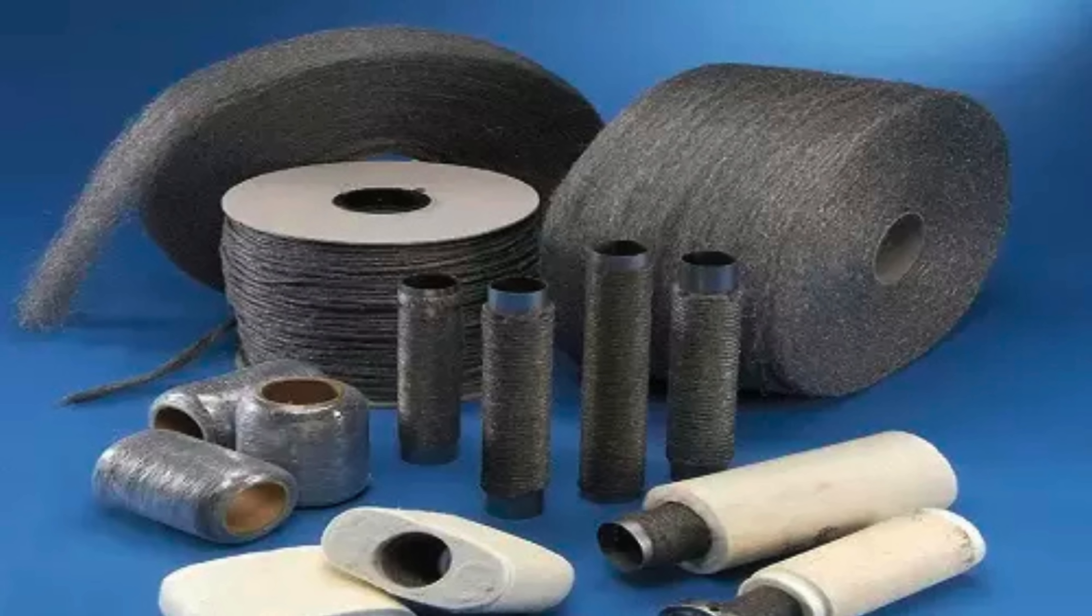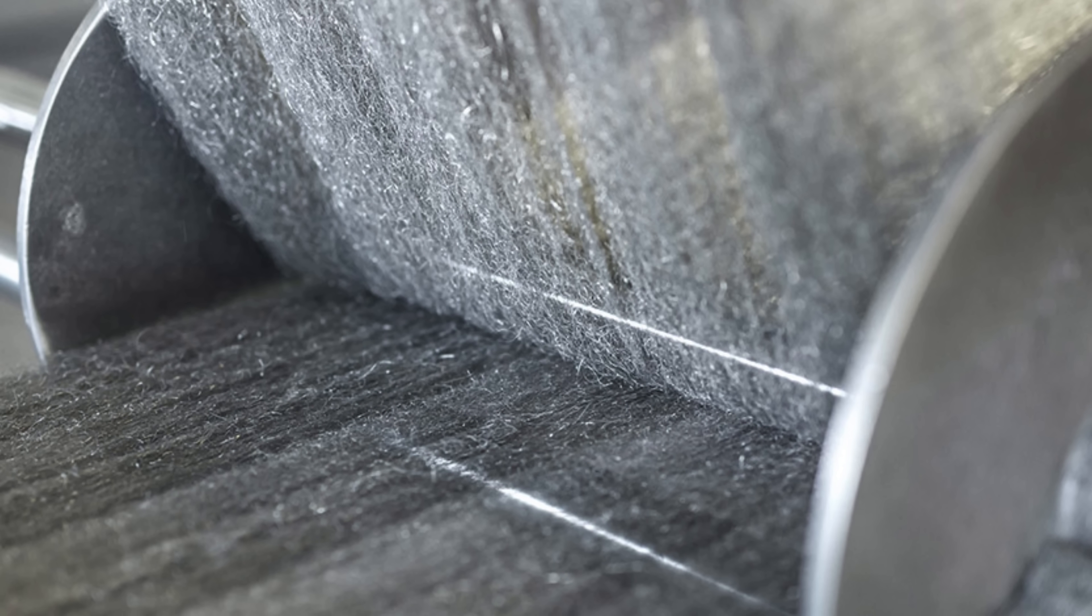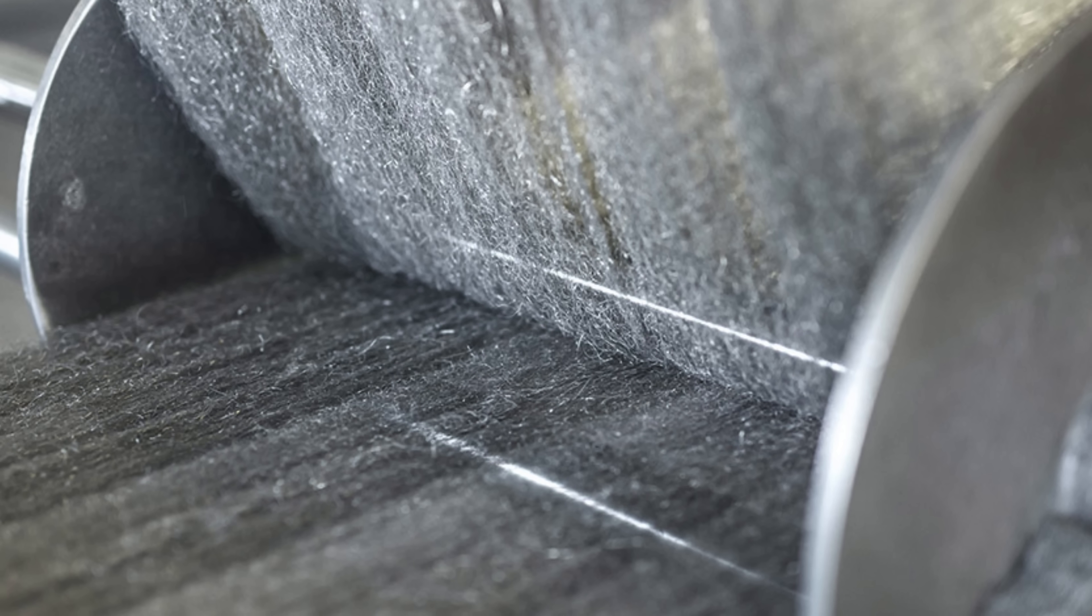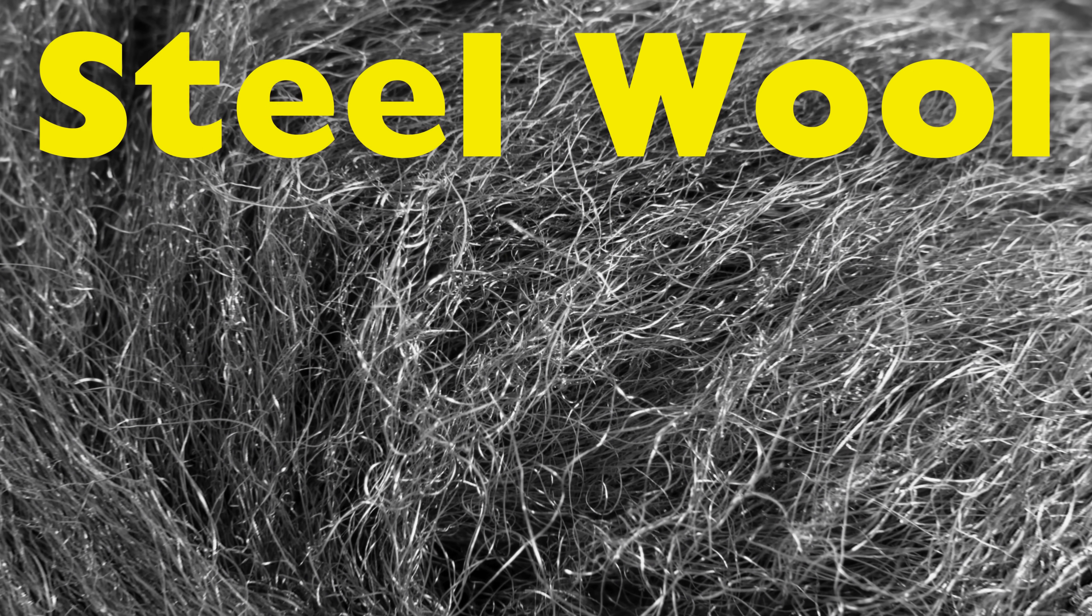How raw, unyielding steel becomes a delicate web of metal threads. What strange machines and clever engineering make this possible? And how does something forged in fire end up bursting into flame once more, with just a spark? We must ask a deeper question. How is something so tough transformed into something so fine?